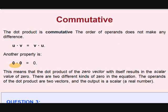Dot product of zero is zero. This means the dot product of zero vector with itself results in a scalar value of zero. This is a vector zero dot vector zero equals scalar zero. The operands of the dot product are two vectors, and the output is a scalar.